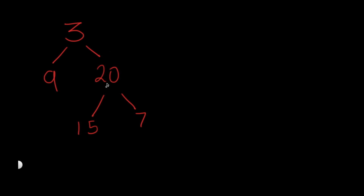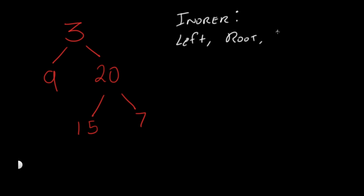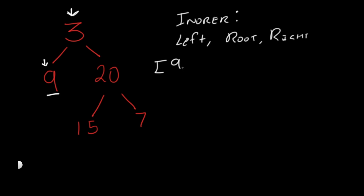Let's first see what this actually means and how we can use it to construct a binary tree. So let's say this over here is the binary tree we're given as an example. You have three types of traversals: in-order, post-order, and pre-order. We only care about in-order and post-order. In an in-order traversal, you first visit the left node, then the root node, then the right node. We always start at the root, which is 3, then look at its left child, which is 9. We check if 9 has a left child — it does not — so we add 9 to our list.